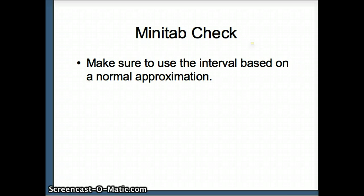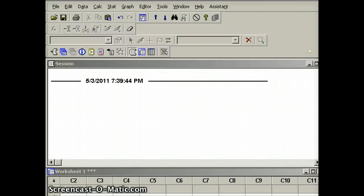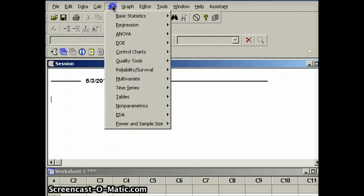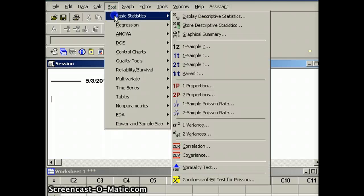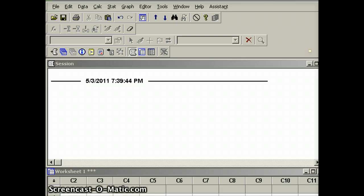I'm going to make sure that we use the interval based on a normal approximation. To do this we're going to go up to the stat button, down to basic statistics, and over to one proportion. This will give us the information we need for one proportion.